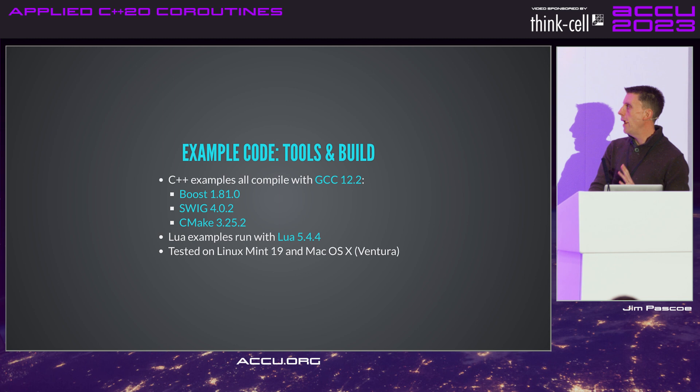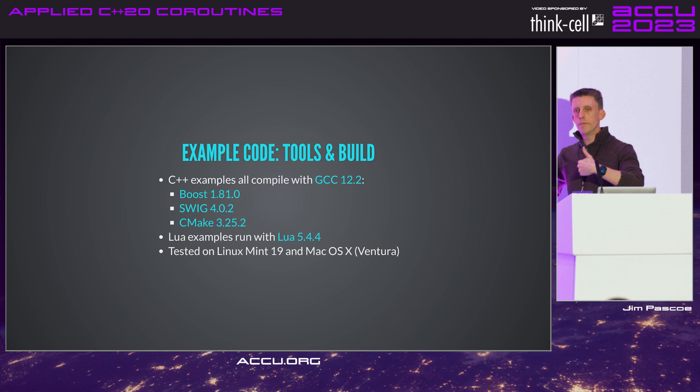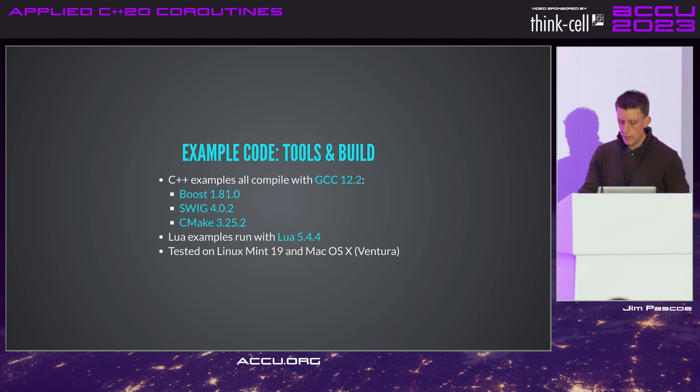A quick note on the example code: it all builds with GCC 12.2. I chose 12.2 because it has very good support for C++23's stack trace — lib stack trace — which is quite useful as a debug mechanism with coroutines, particularly stateful coroutines.